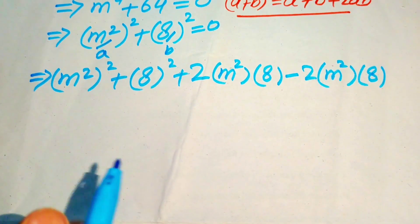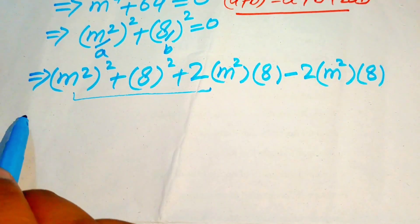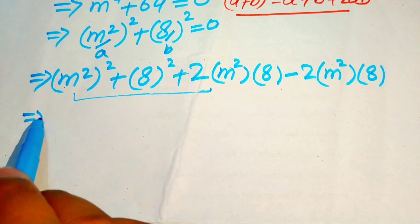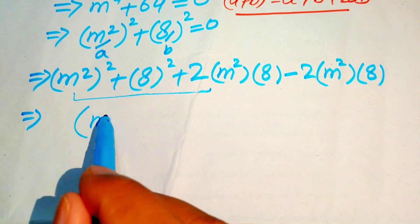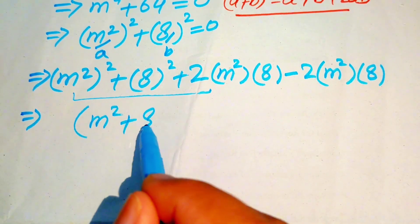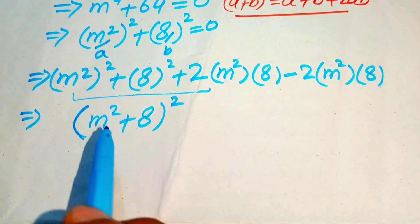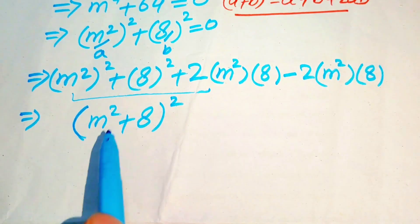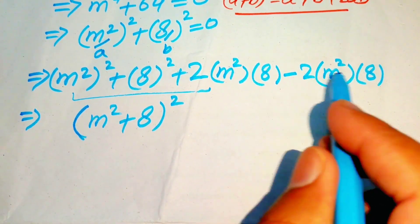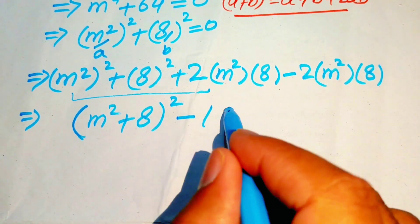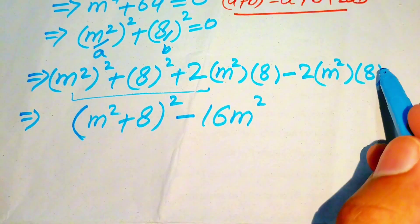We combine all these terms to form (m squared + 8) whole squared. This is the completing the square step, and we get minus 2 times 8, which equals minus 16 times m squared.